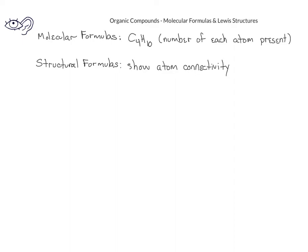In the first one, which we would call a straight chain structure, we see that the carbons are connected in a chain of four carbons, and the hydrogens are connected to the carbons so that each carbon has four bonds. In what we would call a branched chain Lewis structure, the second carbon in the middle has three carbons attached to it. We see in each case that these structures both have four carbons and ten hydrogens, however there are differences. These kinds of structures that have the same molecular formula but the atoms are attached in different ways are called structural isomers.